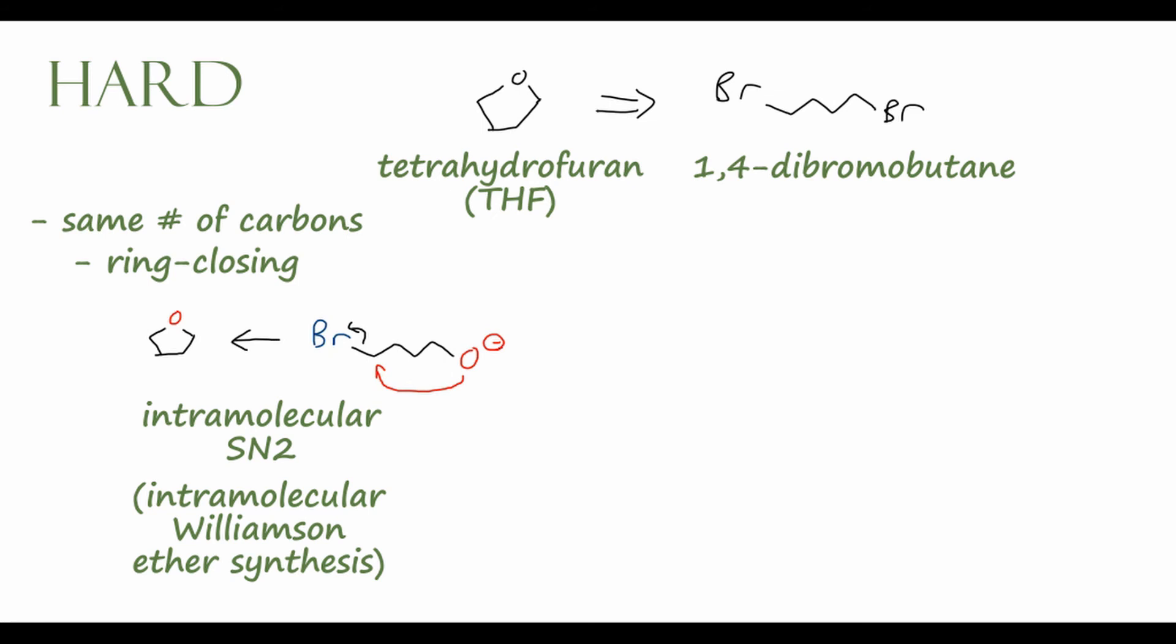Another way to approach retrosynthetic analysis is to work from both the reverse direction and the forward direction, and then meet those two processes in the middle. We figured out the last step as a pretty straightforward last step of the reaction. What could be our first step? We know that we need to somehow convert bromine into an O- functional group on our starting material, and O- is pretty close to OH. So we could think of replacing one of these bromines with a hydroxyl group.